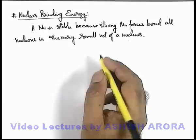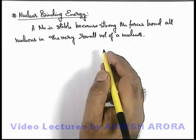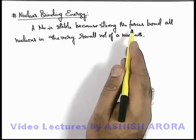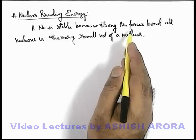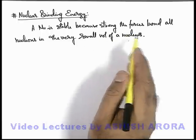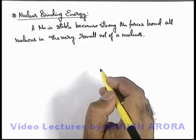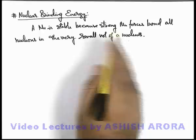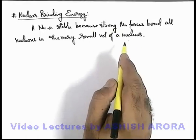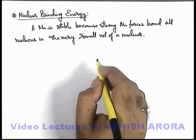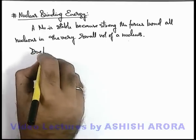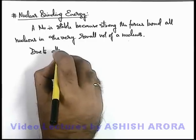We have already studied that in a stable nucleus the strong nuclear forces overall are greater than or equal to the net electrostatic repulsion acting on the protons due to other protons within the nucleus. So overall, as the nucleus is stable it is bounded under the influence of strong nuclear forces. Here we can write that due to attractive nuclear forces,